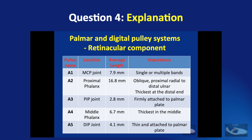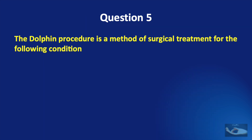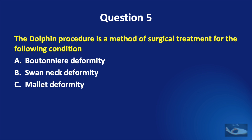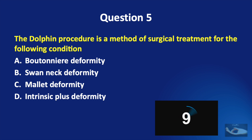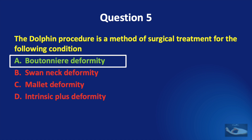The A5 pulley over the distal interphalangeal joint has a length of 4.1 mm. Question number five: the Dolphin procedure is a method of surgical treatment for which condition — boutonniere deformity, swan neck deformity, mallet deformity, or intrinsic plus deformity? The correct answer is the Dolphin procedure is a method of surgical treatment for boutonniere deformity.